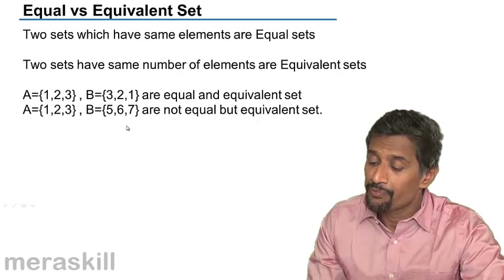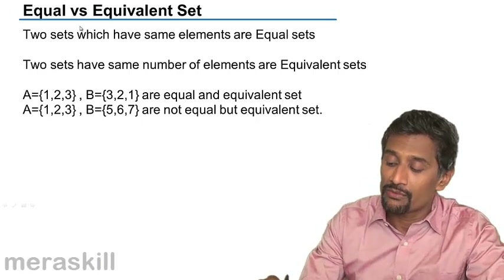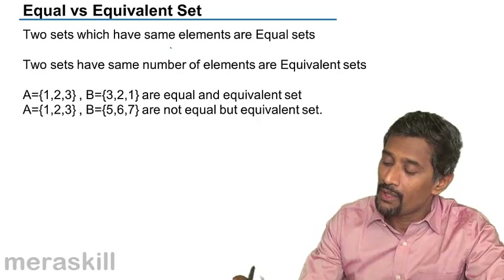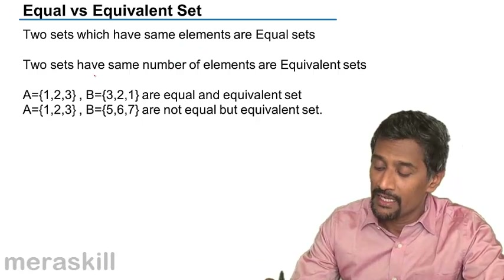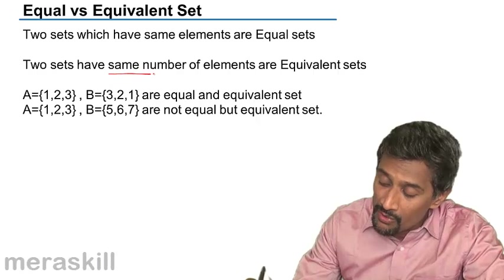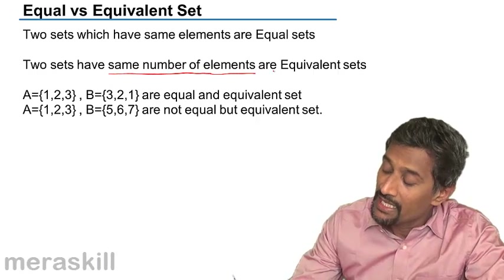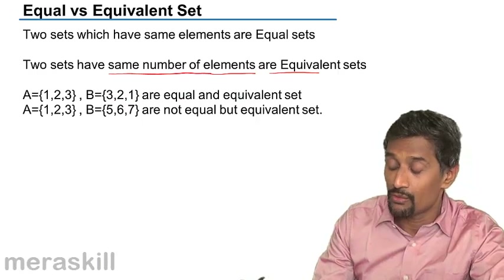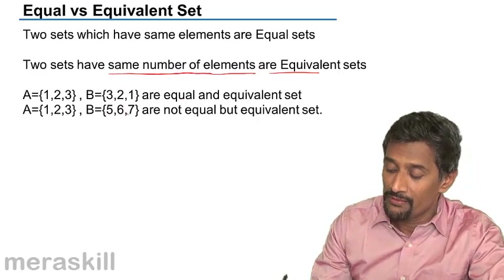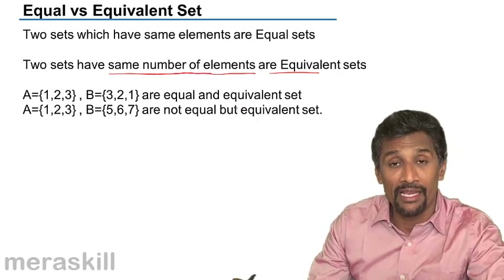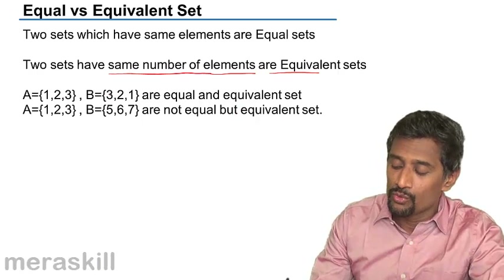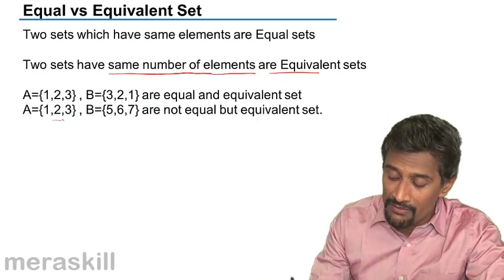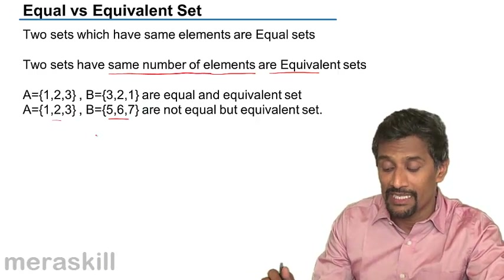These are the various types of sets. Two sets which have the same elements are equal sets, and two sets which have the same number of elements are said to be equivalent sets. For example, {1, 2, 3} and {3, 2, 1} are equal and equivalent. {1, 2, 3} and {5, 6, 7} are not equal but they are equivalent. Whenever two sets are equal they must be equivalent, but equivalent sets need not be equal.